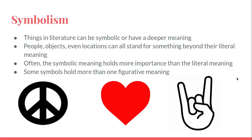First, it's important that we know what symbolism is. Things in literature can be symbolic or have a deeper meaning. This can be people, objects, locations — any of that can stand for something beyond its literal meaning. Often the symbolic meaning is even more important than the literal meaning, and some symbols hold more than one figurative meaning.